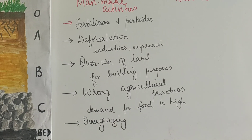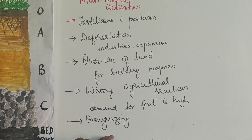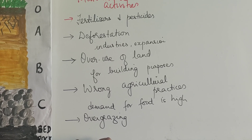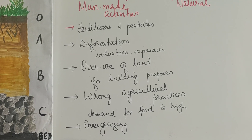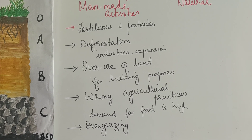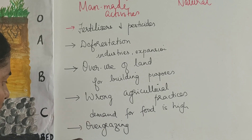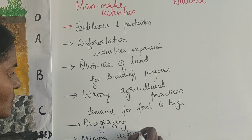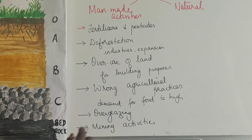Then we have overgrazing. Because of population increase and higher demand for livestock, cattle are taken to places where grass is just beginning to grow, and those areas are eaten up. Sometimes too many cattle feed on the roots, taking away everything, leaving nothing to grow back. And the last man-made cause is mining activities. These are the man-made activities that result in soil erosion.